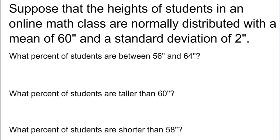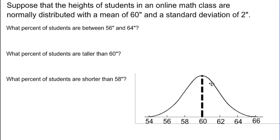Let's look at an example. Suppose that the heights of students in an online math class are normally distributed with a mean of 60 inches and a standard deviation of 2 inches. Whenever we hear 'normally distributed,' we want to sketch a normal curve and place the mean and standard deviations on our picture. I have sketched the normal curve and placed the mean — 60 — and the standard deviations, three to the right and three to the left of our mean, on the normal curve.